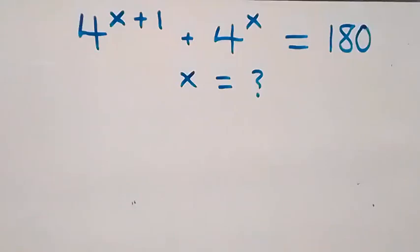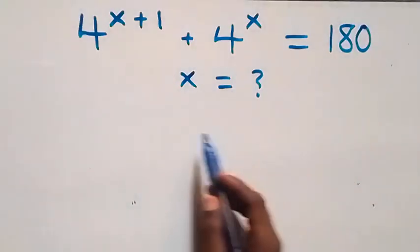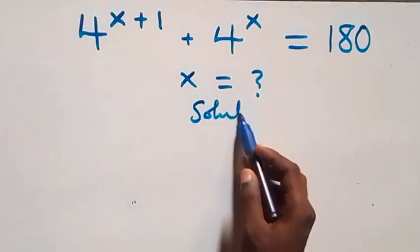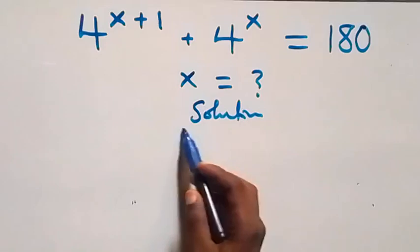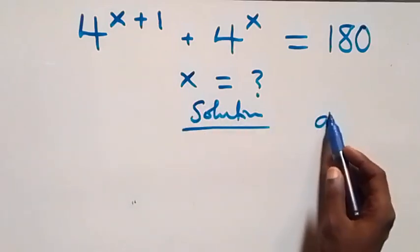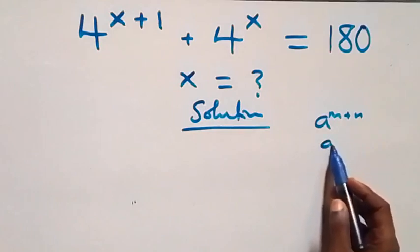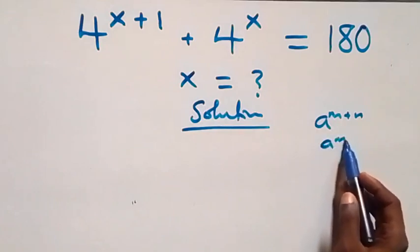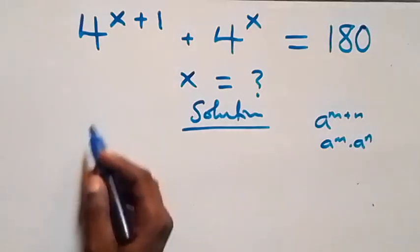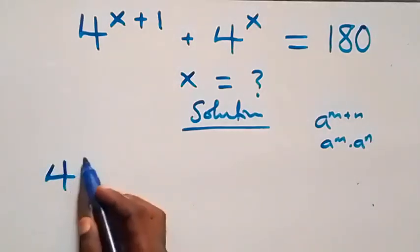Hello, you're welcome. Here we solve a nice exponential equation. We use the rule that a raised to power m plus n can be written as a raised to power m times a raised to power n. So here we have four raised to power x times four raised to power one.